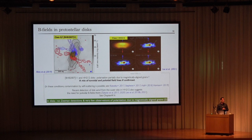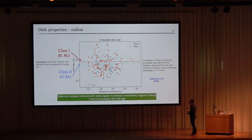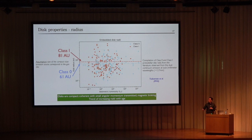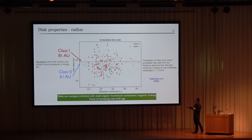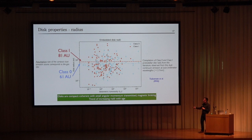It is very hard to directly measure magnetic fields in protostars, so we need other ways to test models and theories. One approach is to look at disk radius — if magnetic field is present, magnetic braking should make small disks. A compilation of disk radii for class 0 and class 1 protostars from sub-millimeter dust continuum emission shows that class 0 disks are about 60 AU and class 1 disks about 80 AU. Both are compact, possibly indicative of magnetic braking, with a trend of increasing disk radius with age that is still debated.